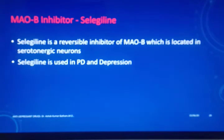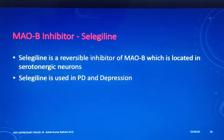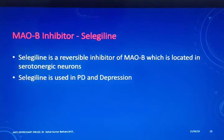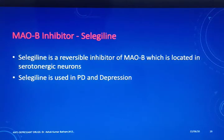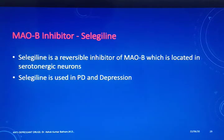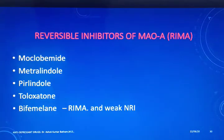There is also an interesting MAO-B inhibitor in the form of selegiline. Selegiline is a reversible inhibitor of monoamine oxidase B, located in serotonergic neurons, and therefore produces an effective antidepressant response. Because of its effect on dopamine metabolism, it is also used in Parkinson's disease. So Parkinson's disease and mental depression are the two main indications of selegiline.